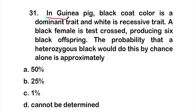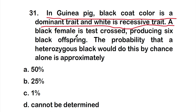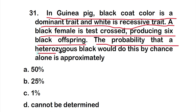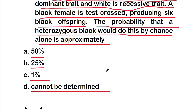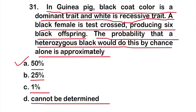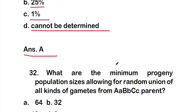Question 31: In guinea pigs, black coat color is dominant and white is recessive. A black female is test-crossed and produces six black offspring. The probability that a heterozygous black would do this by chance alone is approximately — option A: 50%, option B: 25%, option C: 1%, or option D: cannot be determined. The right answer is option A — approximately 50%.